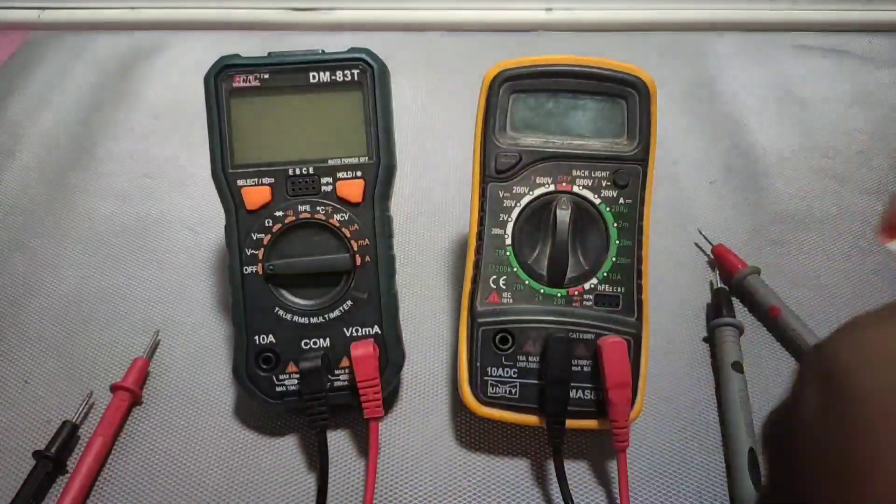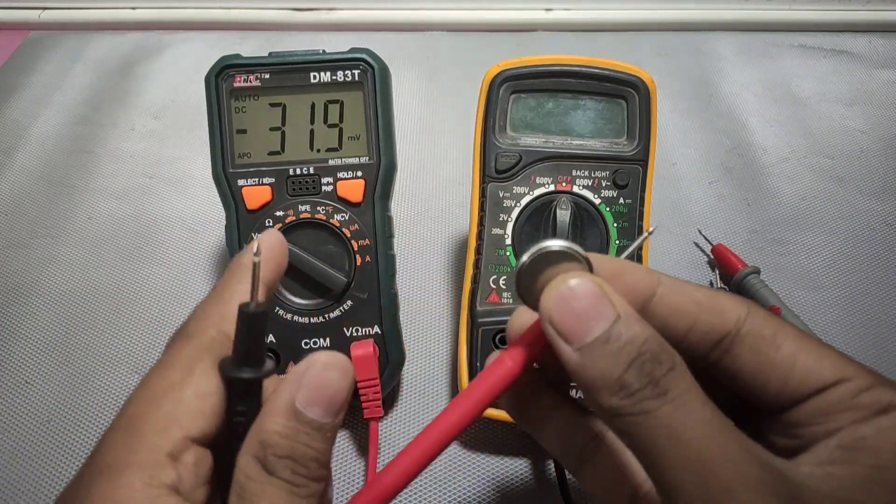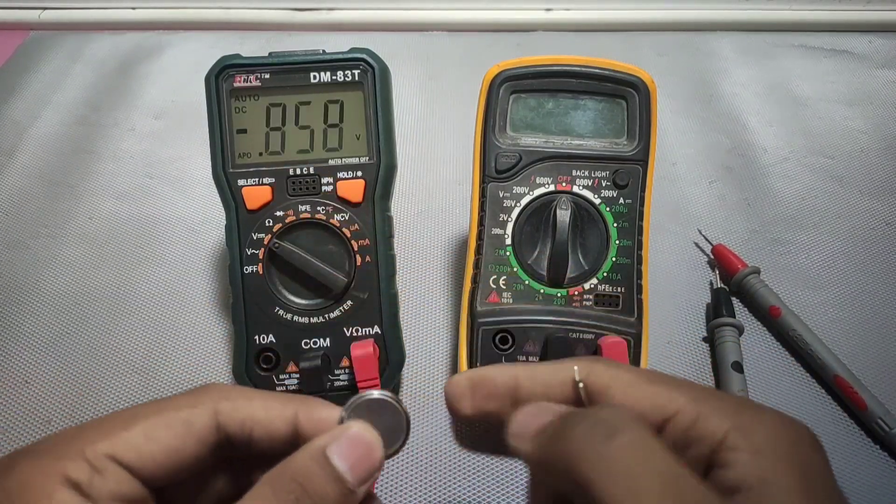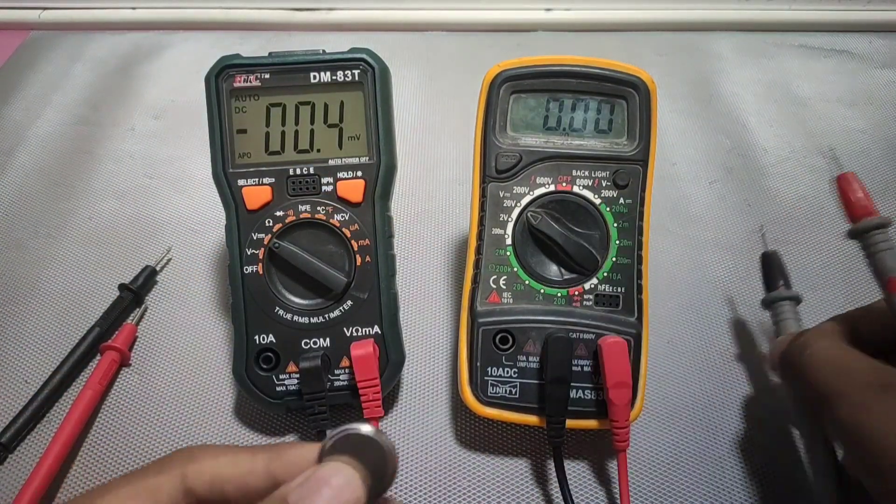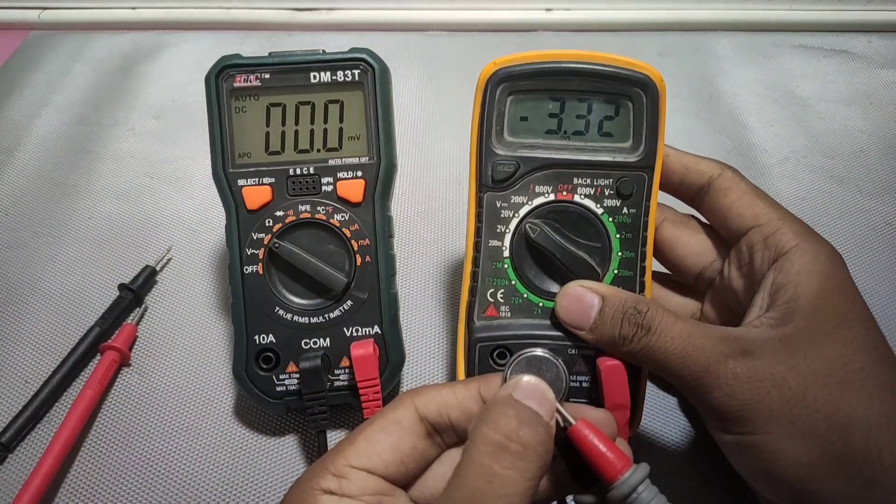So now let's see another coin cell. We will test the voltage of this. And this shows 3.38 and there are no fluctuations in showing voltages. And now let's see. And it shows 3.32.